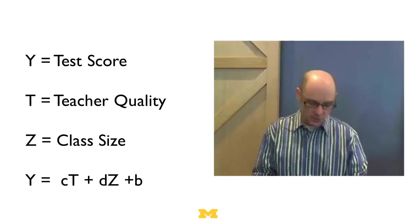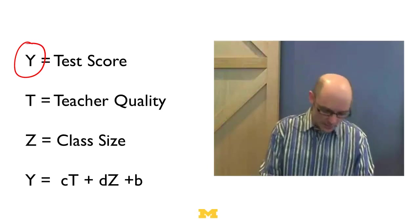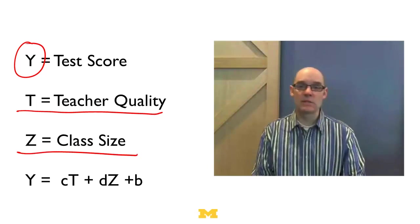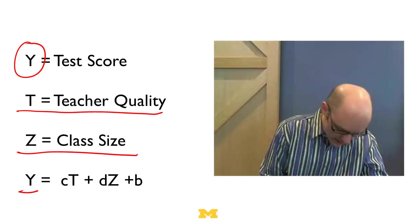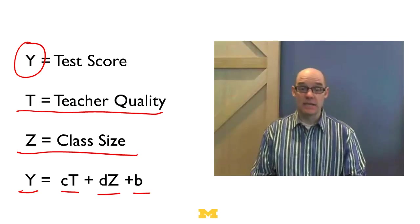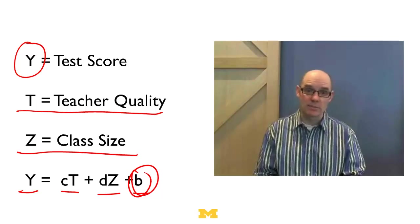Suppose again we're looking at student test scores. So that's y, that's our dependent variable. Well, it could depend on a couple things. It could depend on t, which is teacher quality, and it could depend on z, which is class size. So we just write down a simple linear model that says y equals c times t plus d times z plus b. b is our intercept, just like y equals mx plus b.